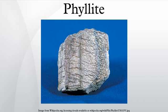Phyllites are said to have a texture called phyllitic sheen, and are usually classified as having formed through low-grade metamorphic conditions through regional metamorphism. Phyllite has good fissility. Phyllites are usually black to grey or light greenish-grey in colour. The foliation is commonly crinkled or wavy in appearance.